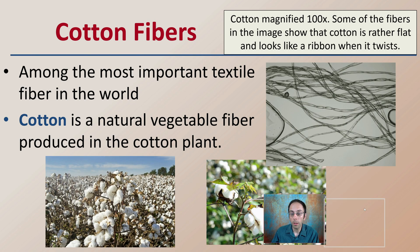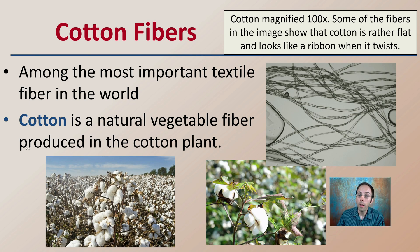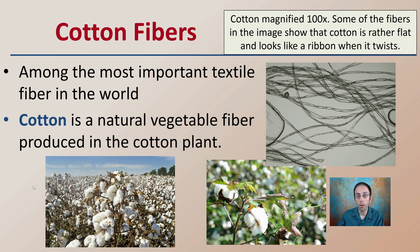Moving on to plant material, we're looking at cotton — the most important textile fiber in the world. Cotton is a natural vegetable fiber produced on the cotton plant, resembling cotton balls in its natural form. When magnified to about 100 times, you can see some of the fibers are rather flat and look like a ribbon when they twist, as you can see evident here.